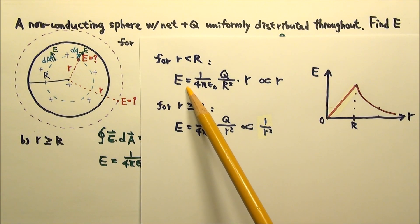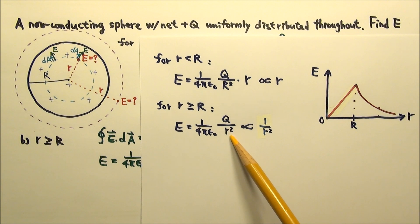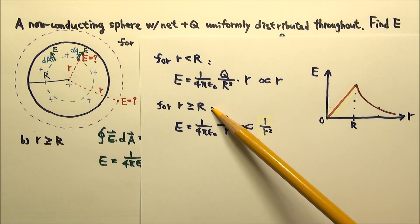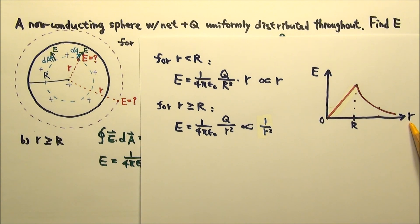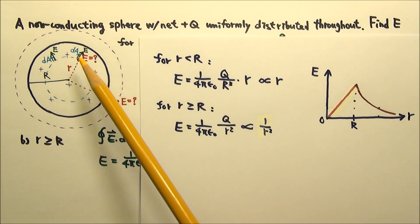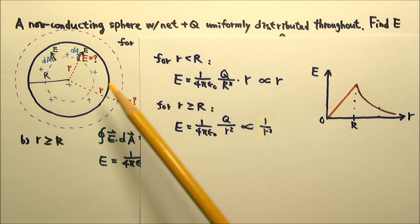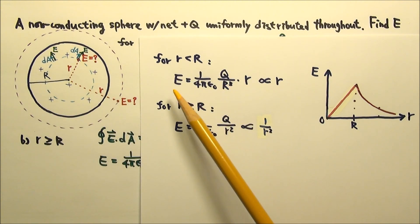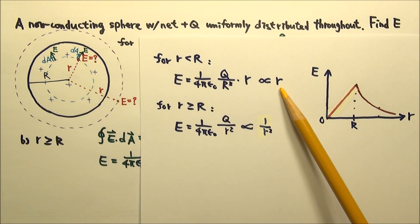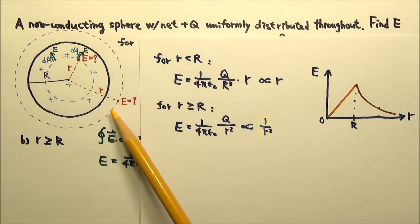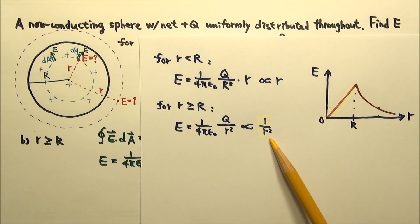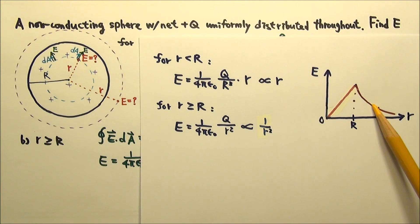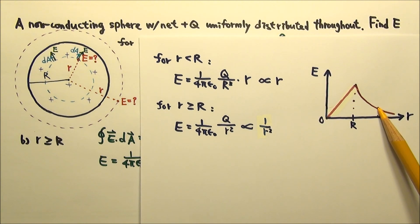Since we found E as a function of little r for all values of little r, we can plot an electric field versus r graph. Within the uniform charge distribution, the electric field is linearly related to little r. On the outside, the electric field is proportional to 1 over r squared, which means when r doubles, the field strength becomes one-fourth.